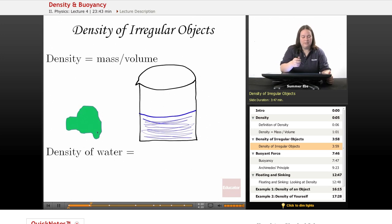What we do here is we do a process where we displace water. We're going to use the displacement of water to measure the volume of an irregular object.